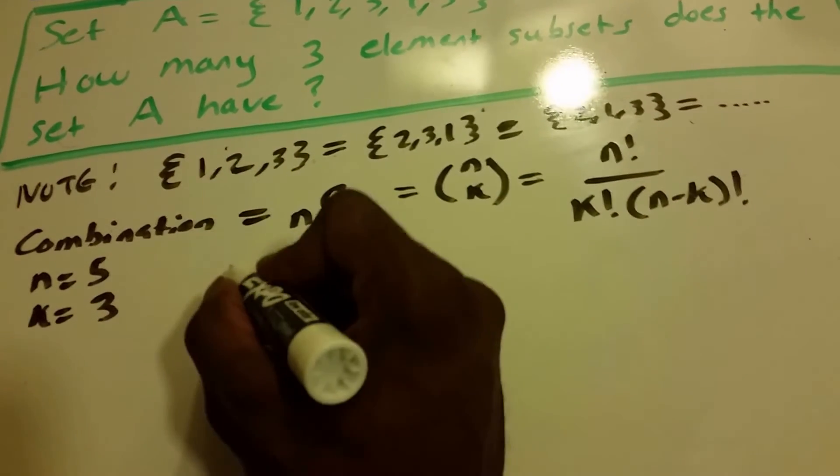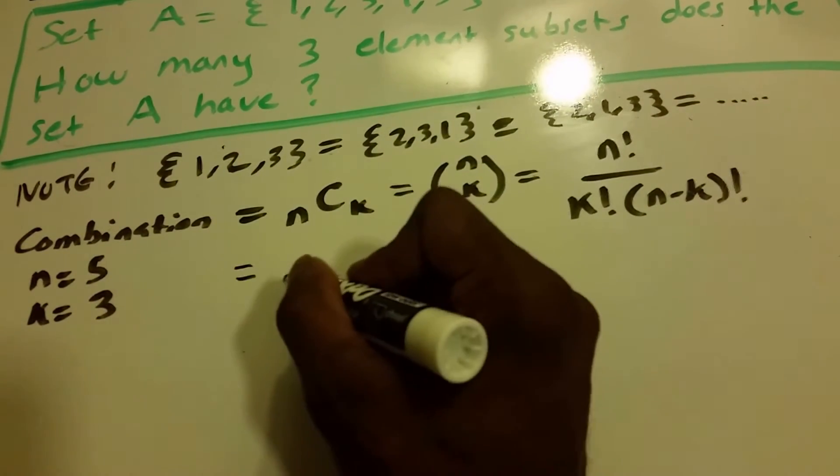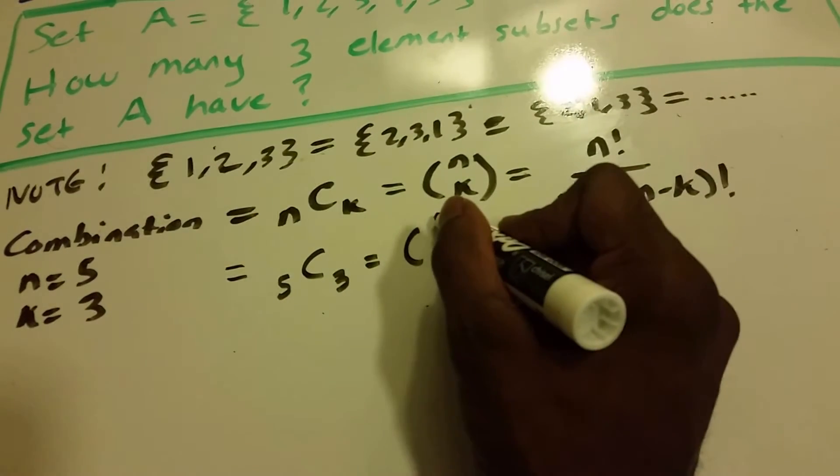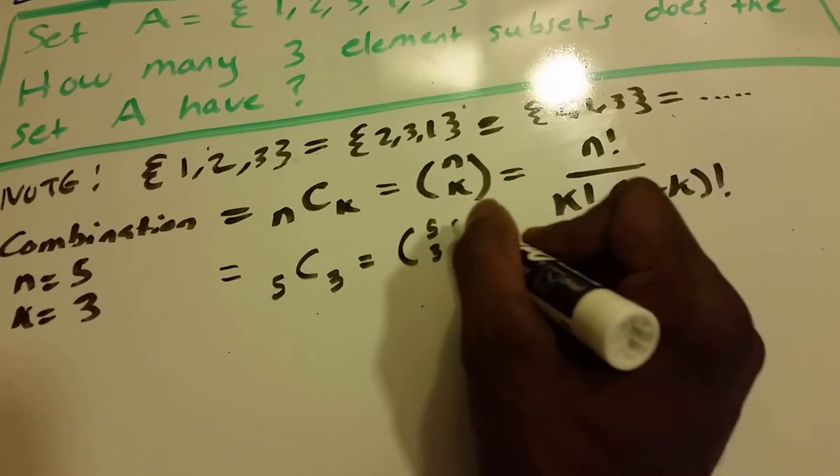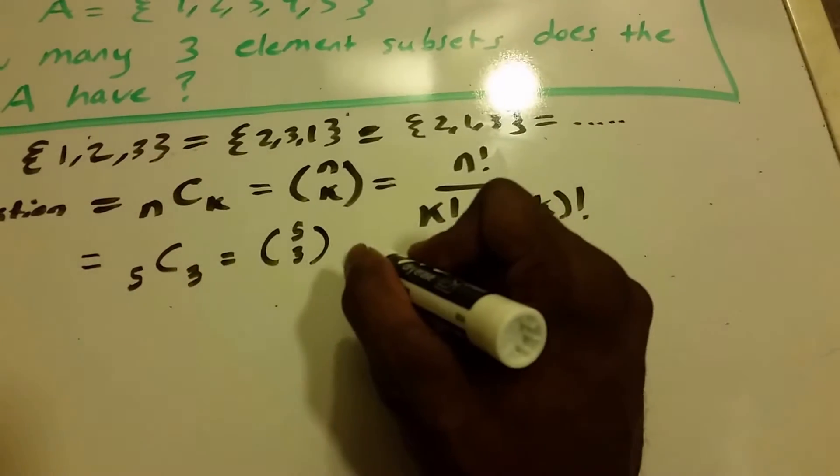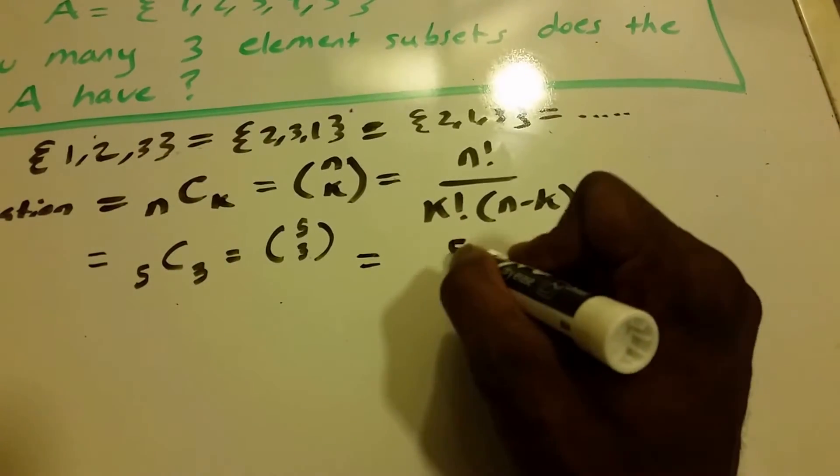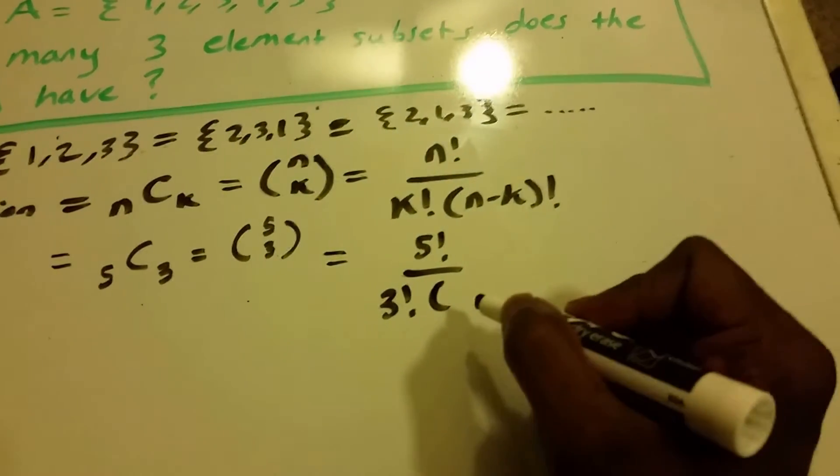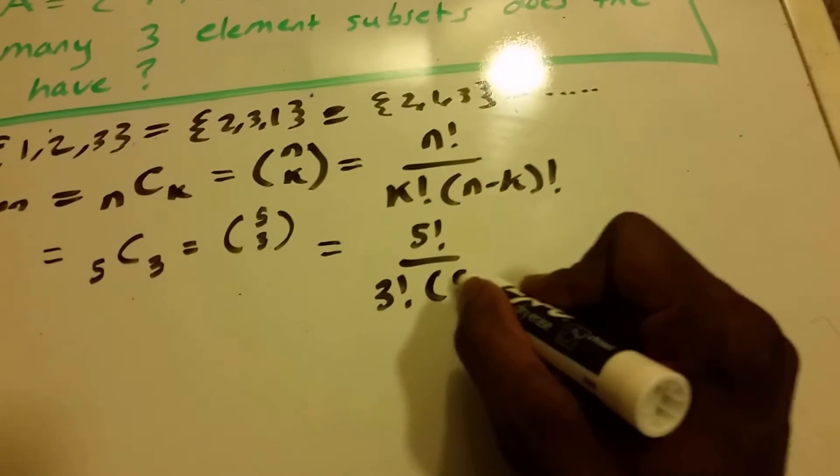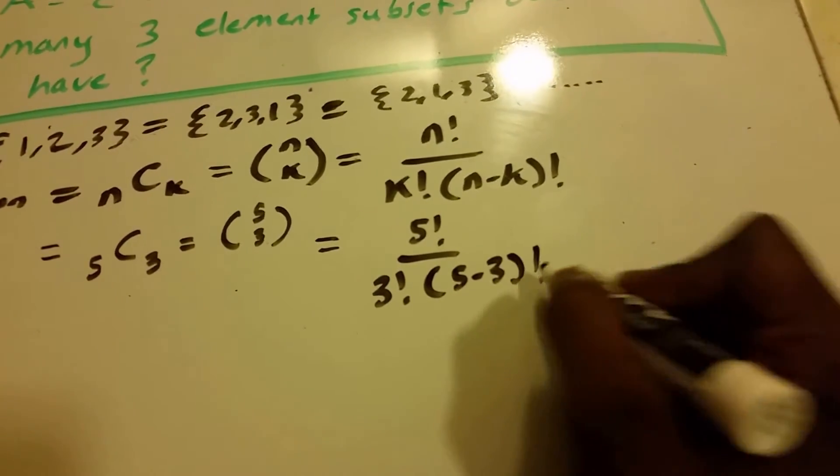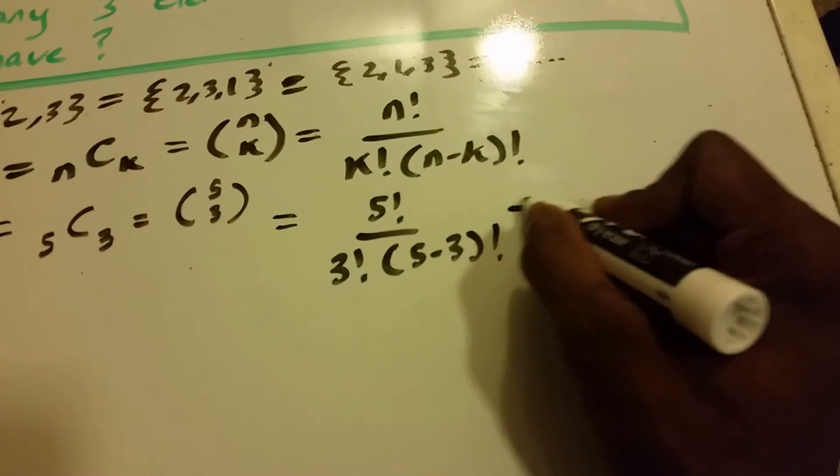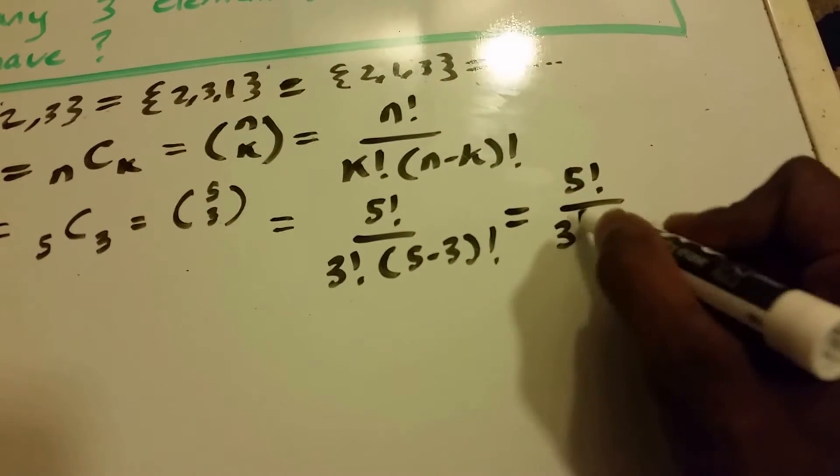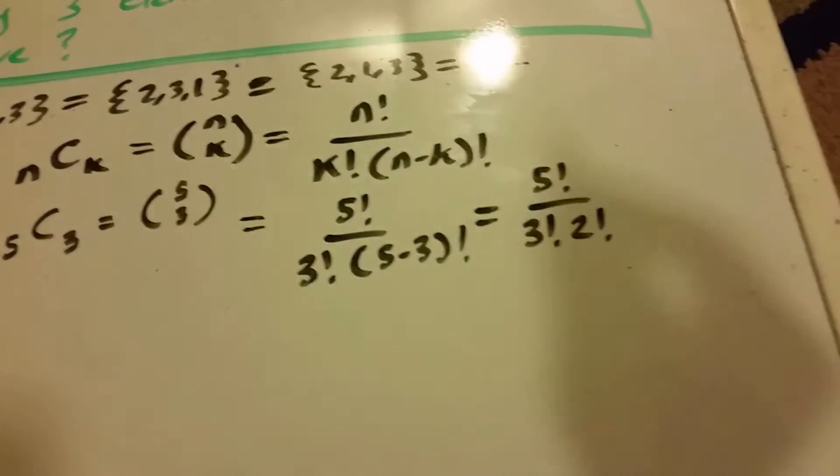So what that means, we plug this into our formula here, we get 5C3, which is equal to, well, we have 5 elements, we're choosing 3 of them. And this is equal to 5 factorial over 3 factorial times 5 minus 3 factorial. So now this is equal to 5 factorial divided by 3 factorial times 2 factorial.